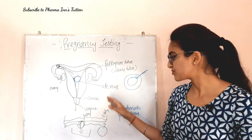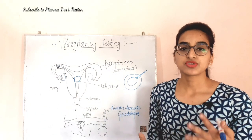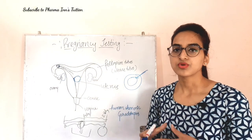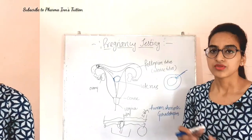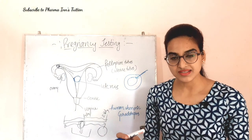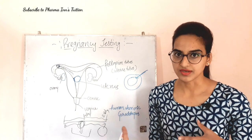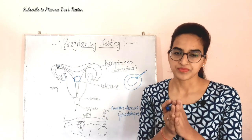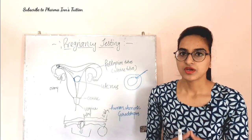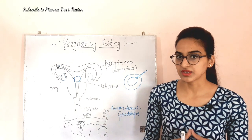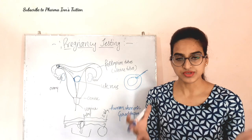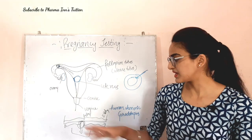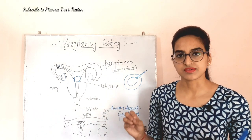If we talk about HCG levels — the pregnancy hormone — in multiple pregnancies, such as twins or triplets with two or three fetuses, the HCG level is double. As pregnancy happens, HCG starts to increase after 6 to 8 days, peaks from 10 to 14 weeks, and then starts to decrease. After conception, if testing is done at 8 to 9 days, the chances of a negative result are higher. Most probably, testing after a missed period gives more accurate results.